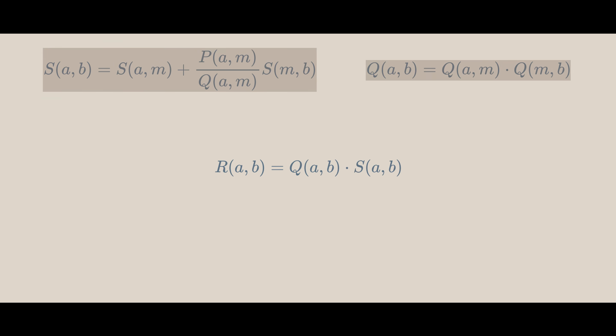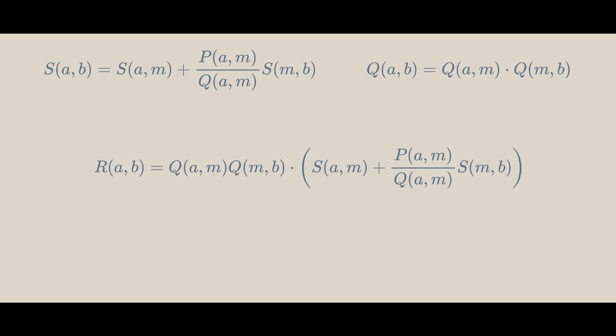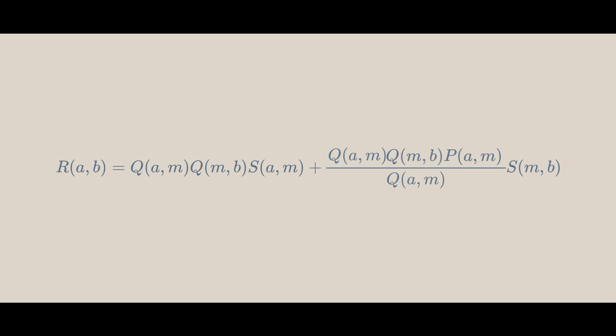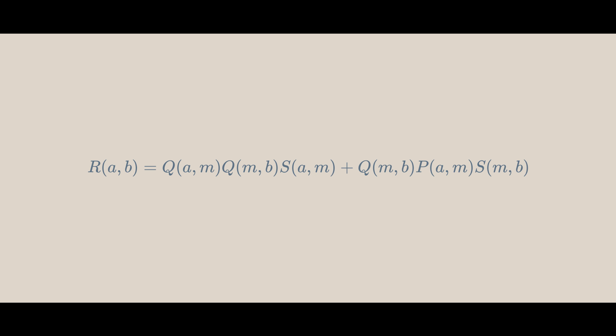Now, let's use these for R(a,b). Let's expand the brackets and simplify. And we see that Q(a,m) times S(a,m) equals R(a,m) and the same logic here. So, we get that R(a,b) equals Q(m,b) times R(a,m) plus P(a,m) times R(m,b).